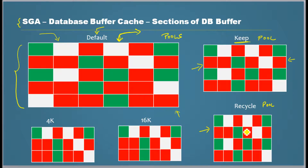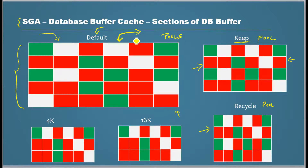As soon as the work is done with data in the recycle pool, it gets aged out immediately, freeing up memory space. We could better use the memory for something else, so for that we can use this pool. When we create those objects, remember we configure the pools also. If we don't configure any pools, by default it goes to the default pool and then it follows the natural pattern - how frequently it gets accessed determines whether it gets aged out or kept in memory.